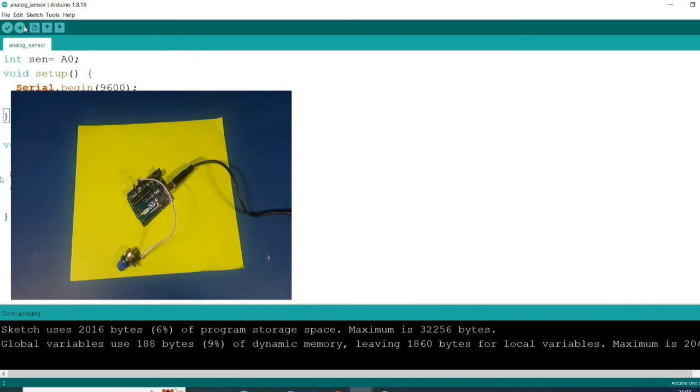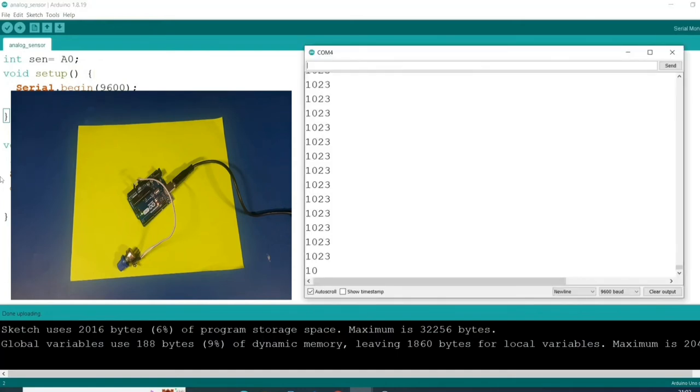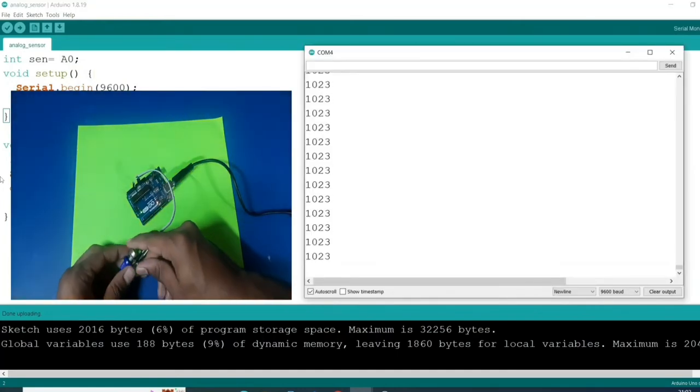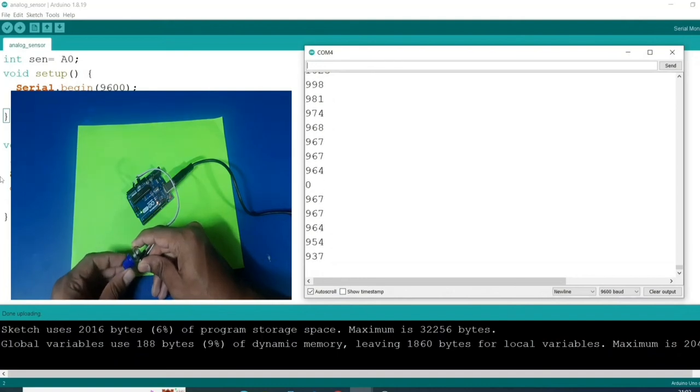Code has uploaded successfully. Now turn on the serial monitor. Right now I'm getting value 1023. When I turn the knob, value gets decremented and it gets down to 0.